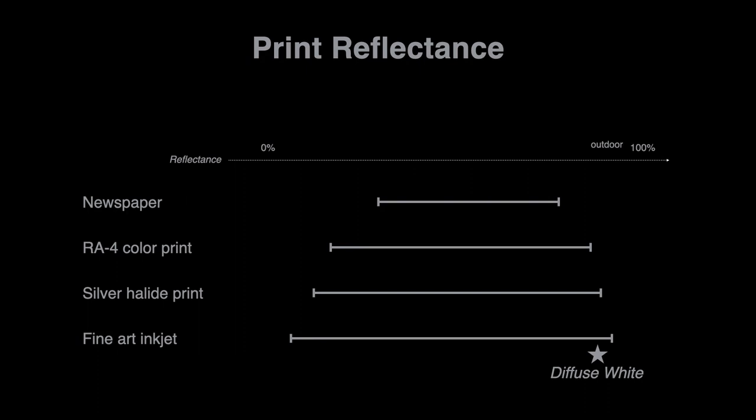In print, the diffuse white value is encoded just below the brightest part of the range, where the paper reflects most of the incident scattered light. Diffuse white is critical to the aspect of HDR photography that I'll discuss in a moment.